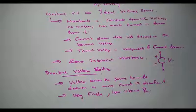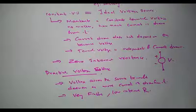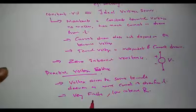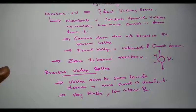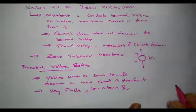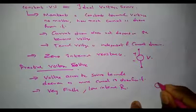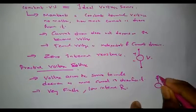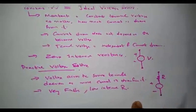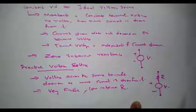These are the two representations for voltage source: constant voltage source and practical voltage source. In a constant voltage source, the terminal voltage is independent of the current drawn, whereas in a practical voltage source, the terminal voltage depends on and decreases with the current drawn. A practical voltage source can be represented by connecting a small internal resistance R in series with the voltage source.